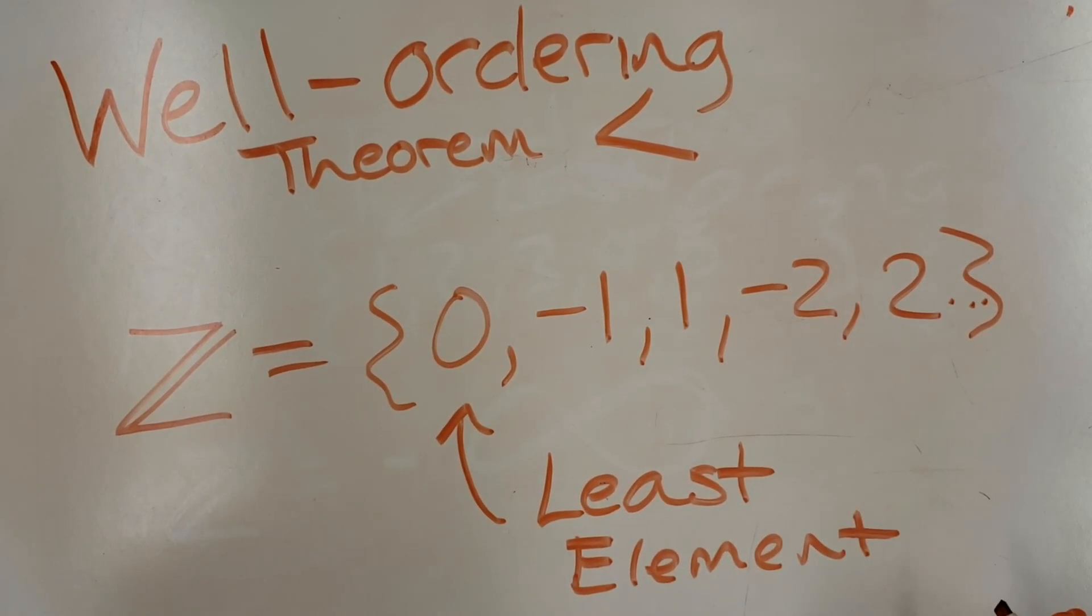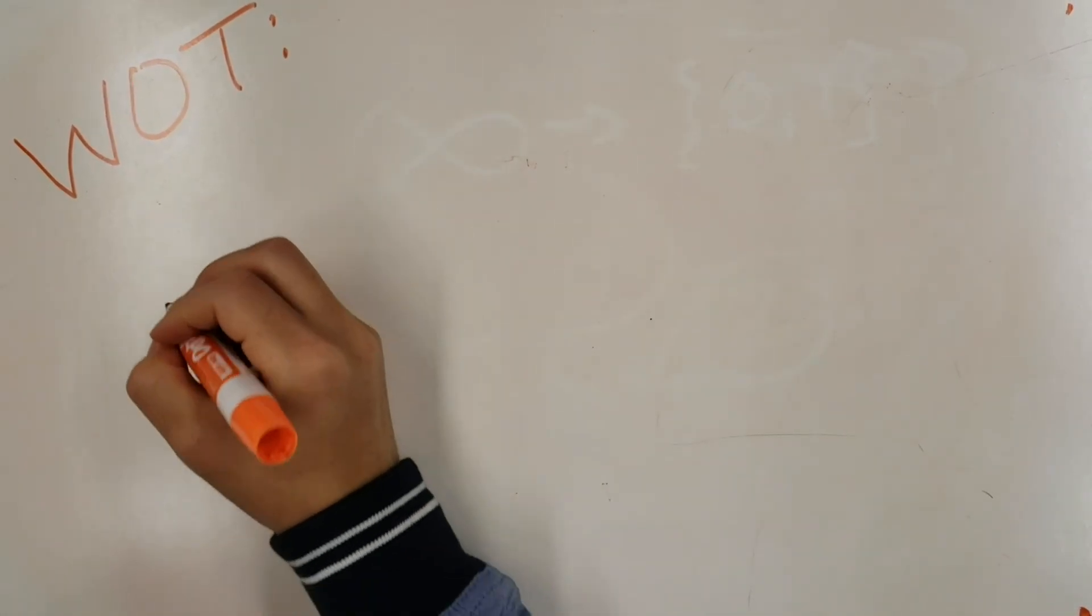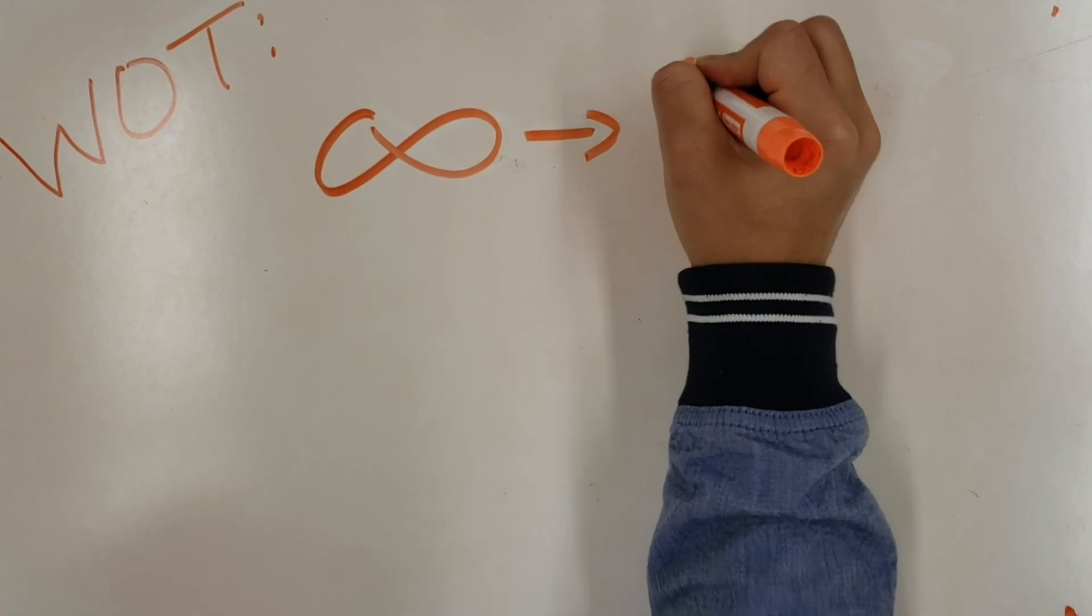What does the theorem say? The well-ordering theorem states that every set is well-ordered, even uncountably infinite sets like the interval from zero to one, where we don't even know necessarily where to start.